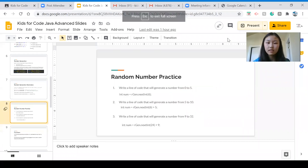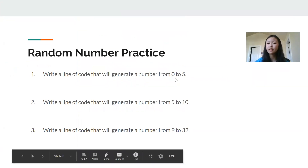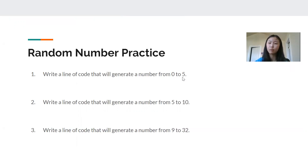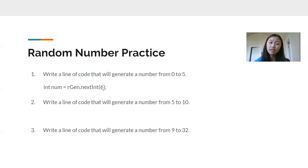A little practice. First: write a line of code that will generate a random number between zero and five. By default, our lower bound is always zero if we don't add anything, and we store it in an integer variable. So: int num = rgen.nextInt(6). Six is our upper bound plus one — it goes zero, one, two, three, four, five. Notice we don't need plus zero because by default it starts from zero.